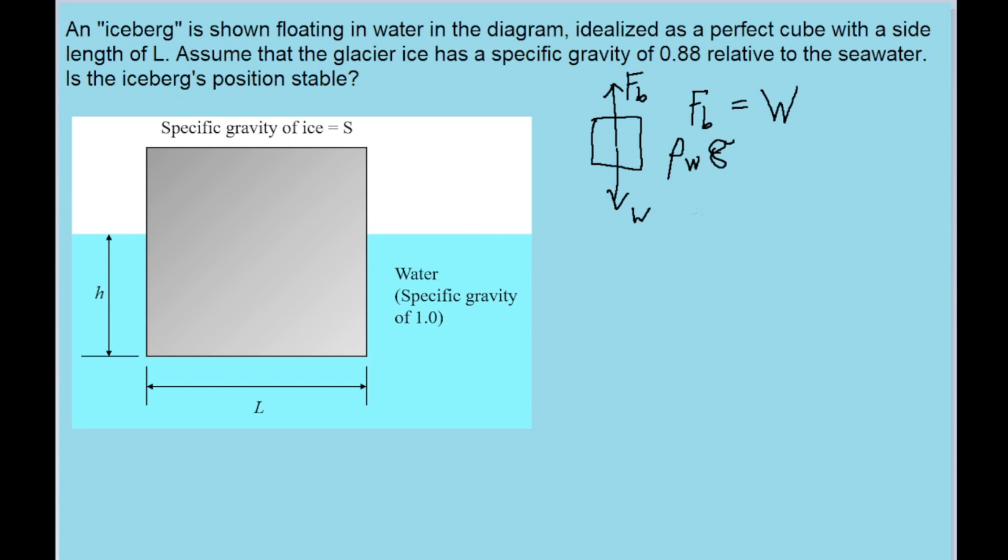So this is just going to be h times L squared, because h is the depth to which it's sunk into water, and then the other two L's are the width with the page and the L depth into the page. And this is equal to the weight of the full cube, which is mg, but we'll write it in terms of densities and volumes. So that is the density of the cube, which is S times the density of water, times g, times the volume of the cube, which is L cubed.